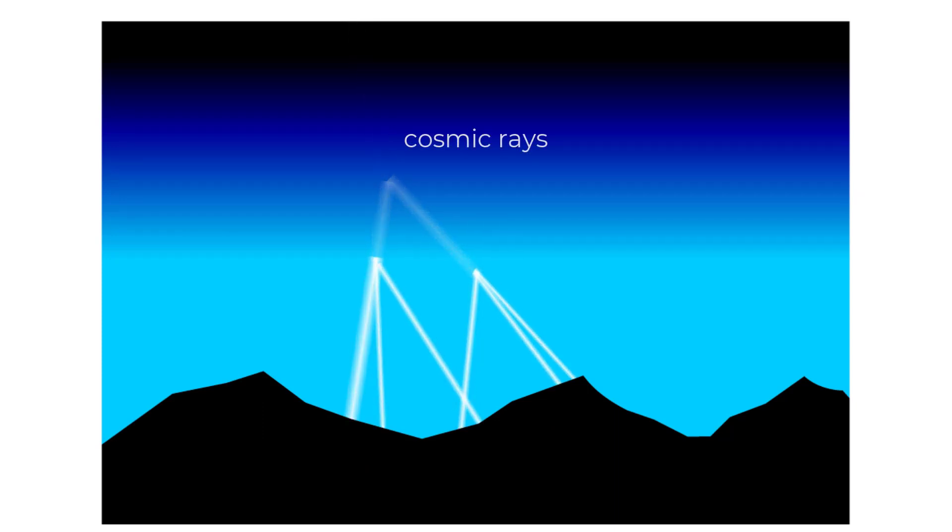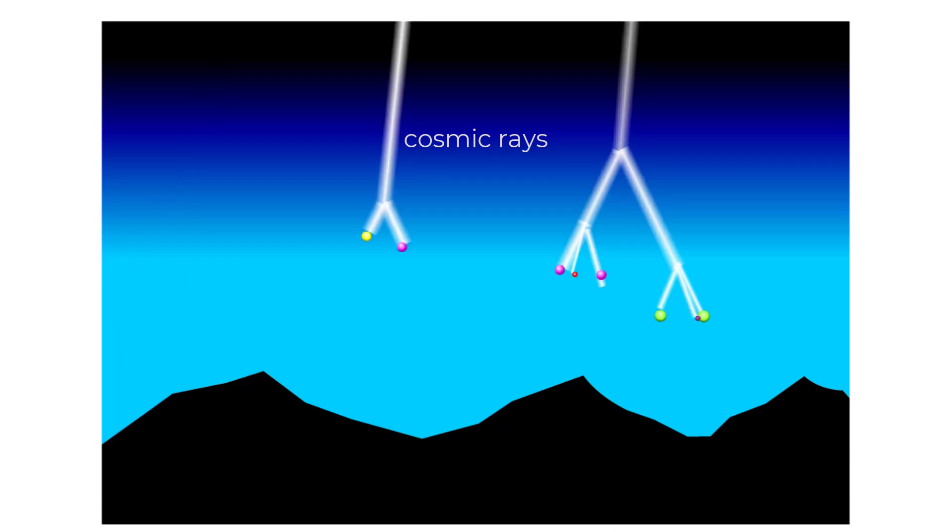And cosmic rays, which are mostly protons from the sun moving at very high speed, create a shower of charged particles as they smash up air atoms in the upper atmosphere.